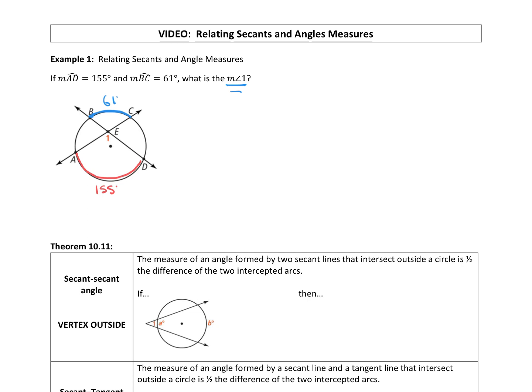Angle one right here is formed by two secants. They intersect and the vertex is inside the circle. We're always going to point that out because you'll see examples where the vertex is outside the circle and that changes things. When the vertex is inside the circle, the angle is equal to half the sum of the arcs. The measure of angle one is equal to one half times arc AD plus arc BC.